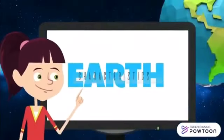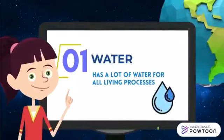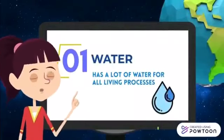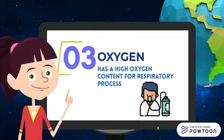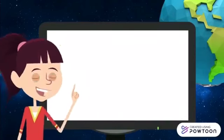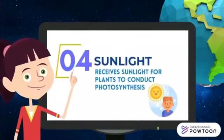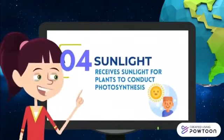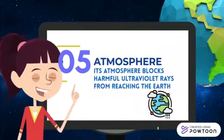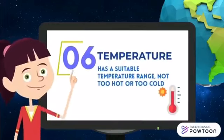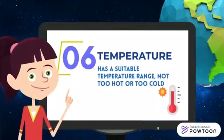Moving on to Earth's characteristics. The first one is water. The second is gravity. The next is oxygen. The fourth one is sunlight. Upcoming is atmosphere. Last but not least, temperature.